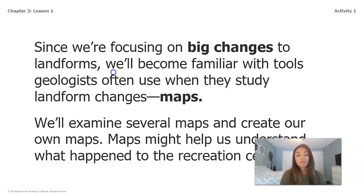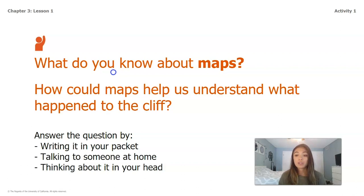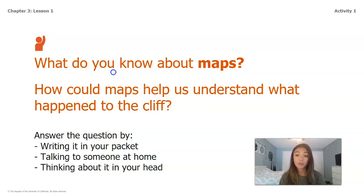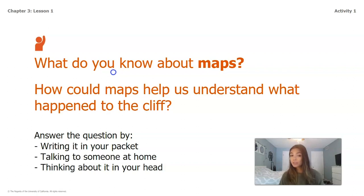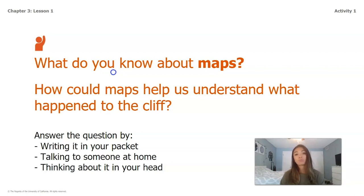We're going to examine several maps and create our own maps. Maps might help us understand what happened to the recreation center's cliff. Before we go back to our book to look at some maps, I want you to think about what you already know about maps and how maps could help us understand what happened to the cliff. Pause this video and answer by writing it down, talking to somebody at home, or thinking about it in your head. Maps can help us see how close the flagpole is to the edge of the cliff. Also, if we looked at an old map of the cliff, it could help us see if the cliff changed over time and by how much.